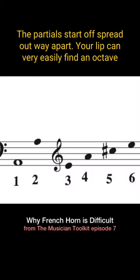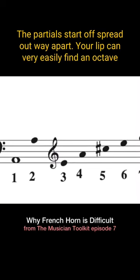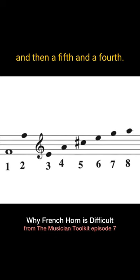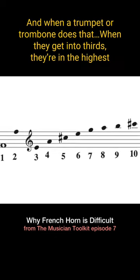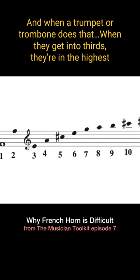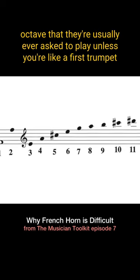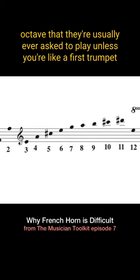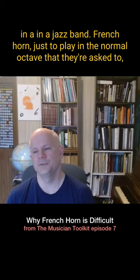The partials start off spread out, way apart. Your lip can very easily find an octave, then a fifth, then a fourth. When a trumpet or trombone gets into thirds, they're in the highest octave they're usually ever asked to play, unless they're like a first trumpet in a jazz band.